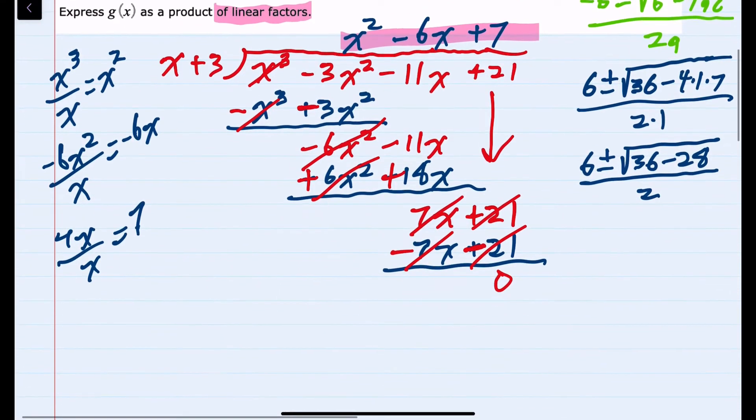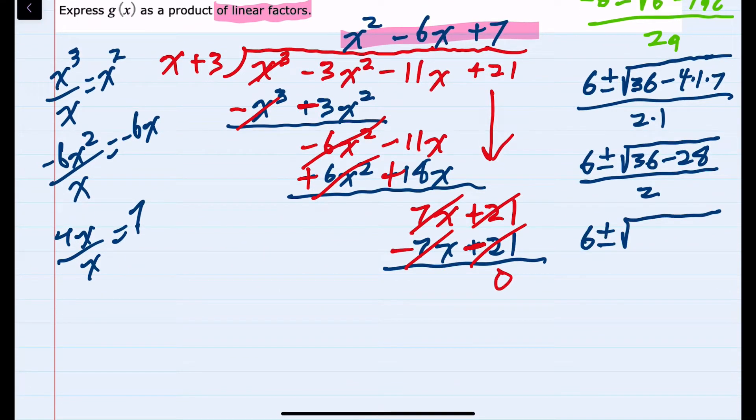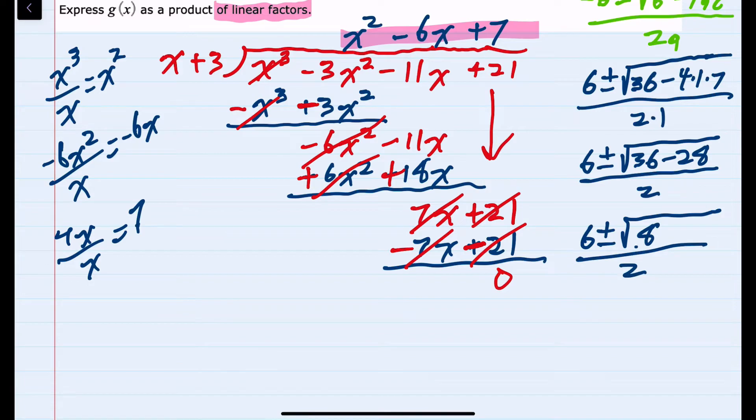Continuing under the radical, 36 minus 28 would be 8, and since the 8 can be written as 4 times 2, we can bring the 4 out of the radical by taking the square root, and this would be 6 plus or minus, the 4 comes out as a 2 square roots, the other 2 stays under the radical, over 2.